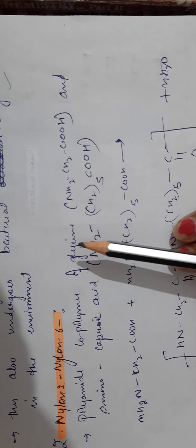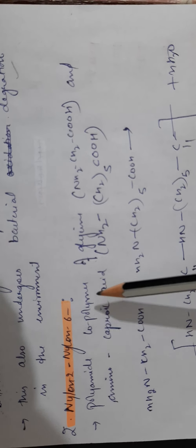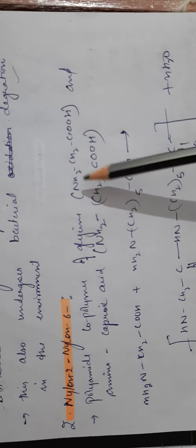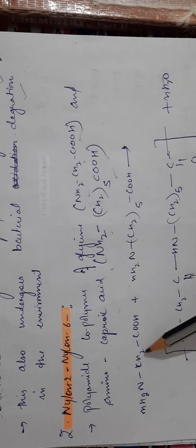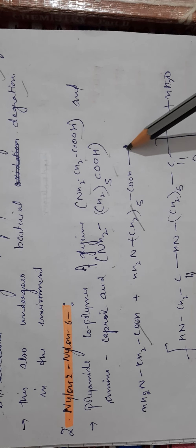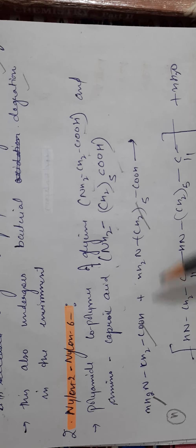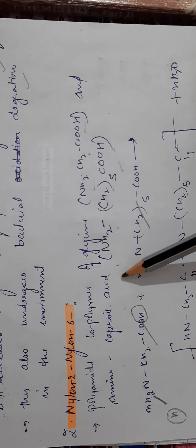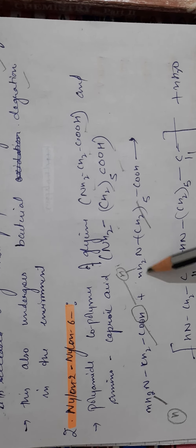There is also a polyamide co-polymer (nylon-2-nylon-6) which is a co-polymer. Its monomers are glycine (NH2-CH2-COOH) and amino caproic acid (NH2-(CH2)5-COOH). These monomers undergo polymerization similarly, releasing water to form amide linkages.